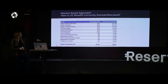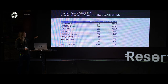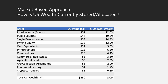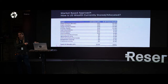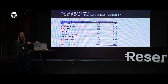This is currently how wealth is stored in the United States, and it's pretty similar globally. About $52 trillion is stored in bonds, $44 trillion in public equities, $33 trillion in single family homes, $32 trillion in private companies, $22 trillion in cash, $15 trillion in infrastructure, $10 trillion in commodities, and then smaller allocations beyond that. These are the major asset classes — this is where people are actually currently storing wealth.